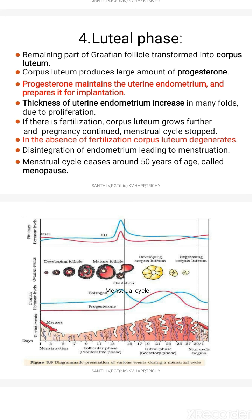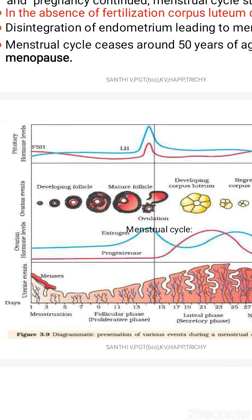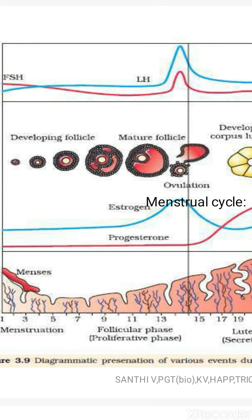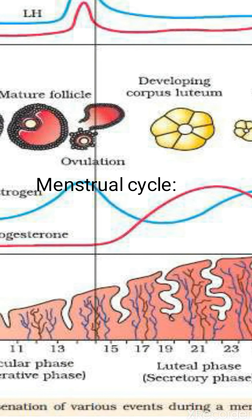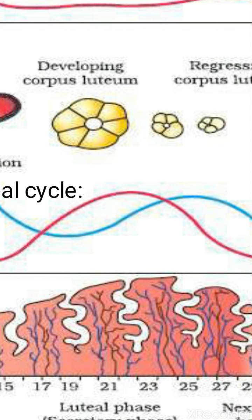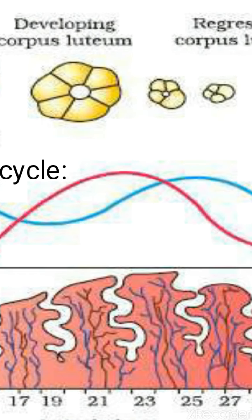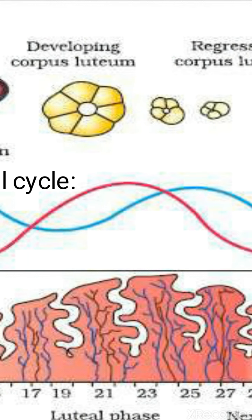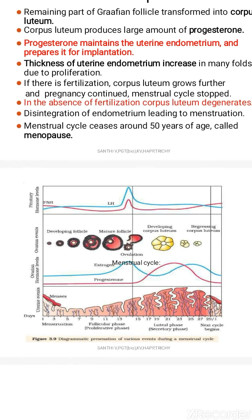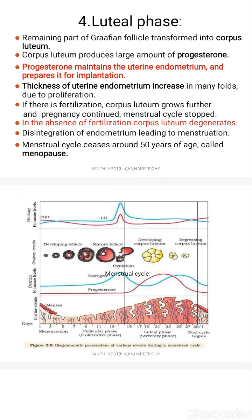The function of progesterone is to maintain the uterine endometrium. You can see the uterine wall is degraded during the menstrual phase, then proliferation occurs and increases. When the progesterone level increases, the endometrial wall lining thickness also increases. Mainly, progesterone maintains the uterine endometrium and increases its thickness.